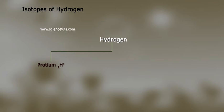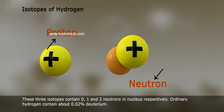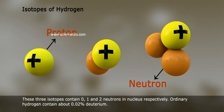Isotopes of Hydrogen: Hydrogen has three isotopes. 1. Protium (¹H), 2. Deuterium (²H or D), and 3. Tritium (³H or T). These three isotopes contain 0, 1, and 2 neutrons in nucleus respectively.